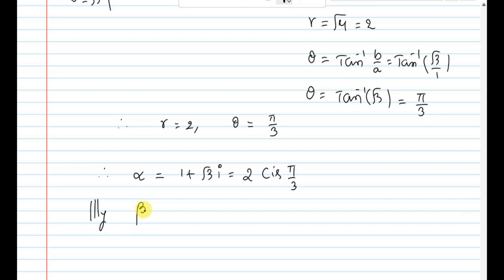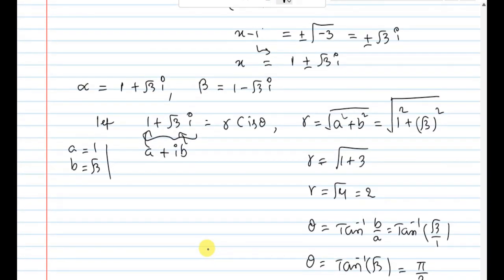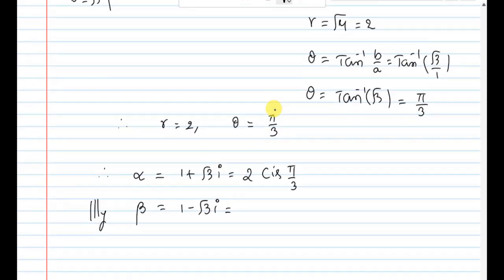Similarly, beta equals 1 minus root 3i. The difference is the minus sign. The difference between alpha and beta is the sign, so the angle changes. The angle is minus pi by 3.